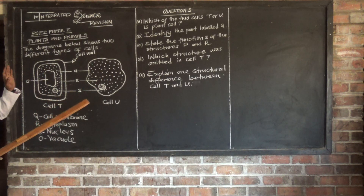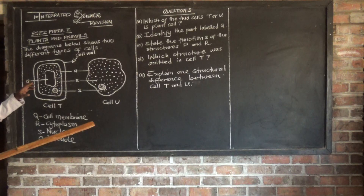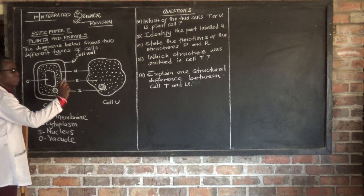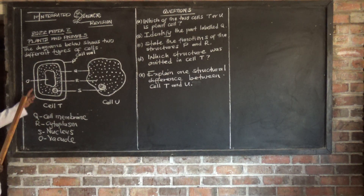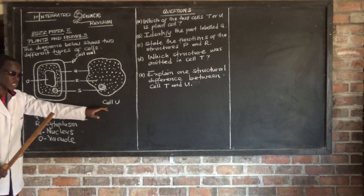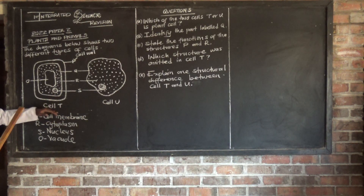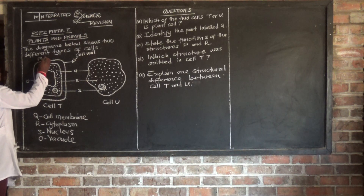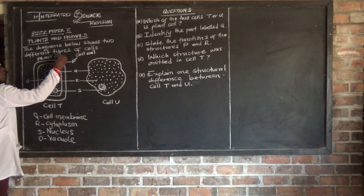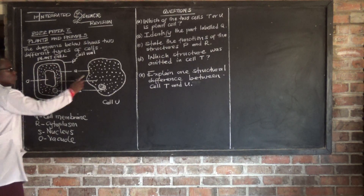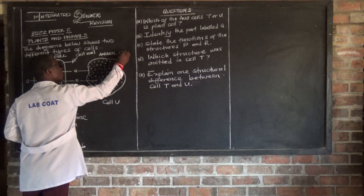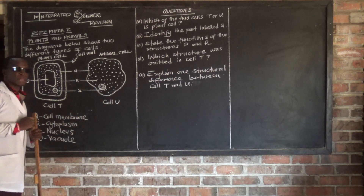Before we look at the questions, it's very, very important — just looking for the sake of revision. Look at Cell T and Cell U. You realize Cell T has a cell wall. Cell U has no cell wall. So we can tell Cell T is the plant cell, because it consists of a cell wall. And Cell U is the animal cell.